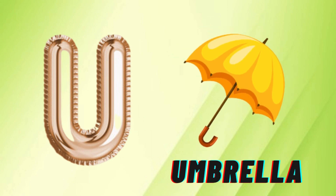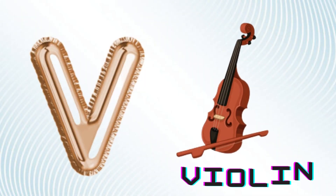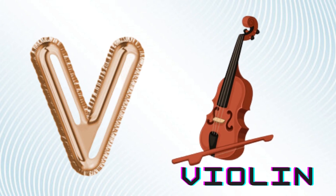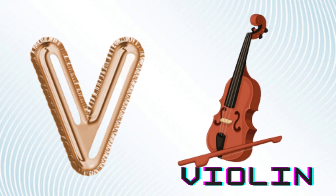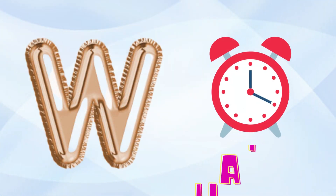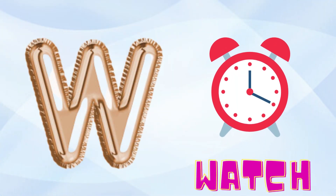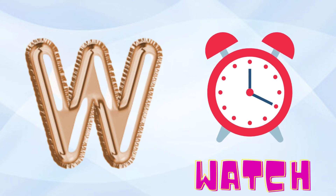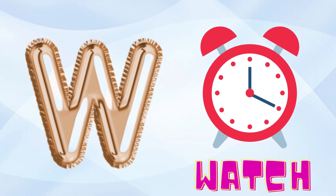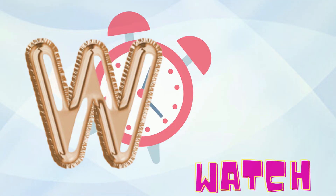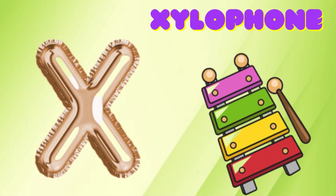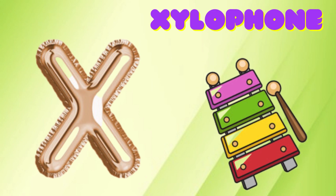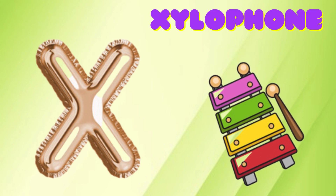U is for umbrella, u, u, umbrella. V is for violin, v, v, violin. W is for watch, w, w, watch. X is for xylophone, x, x, xylophone.